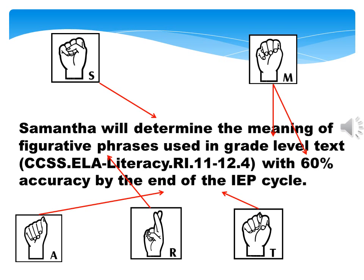Here is another example of a SMART goal. Notice in this goal that I have included a reference to the Common Core State Standards. This reference is not mandated, but if you're writing standards-based goals, or if it's something you would like to do as a different format, that is permissible — however, it is not required. The goal is that Samantha will determine the meaning of figurative phrases used in grade-level text, with 60% accuracy, by the end of the IEP cycle.